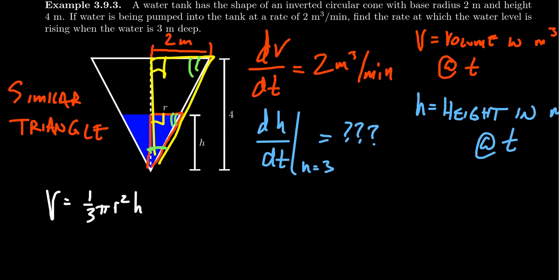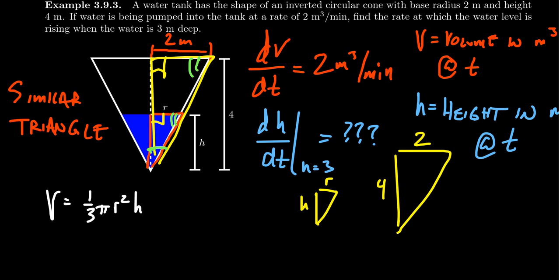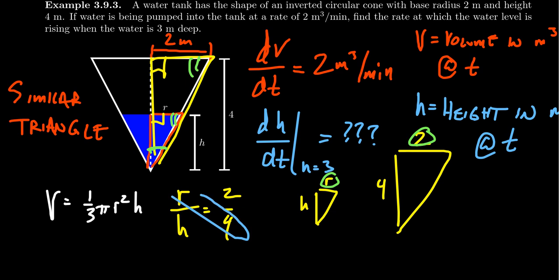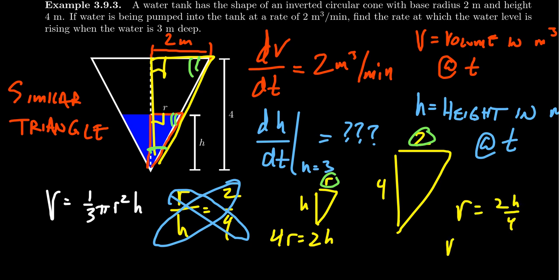We can set up a proportion between the two triangles. The small triangle has height h and radius r; the large triangle has height 4 and radius 2. So r/2 = h/4, giving us 4r = 2h. Solving for r, we get r = h/2. No matter how high up the cone you are, the radius will be exactly half of the current height.